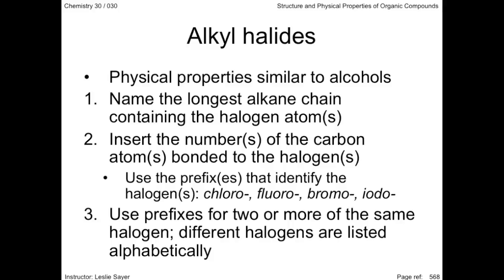Use di-, tri-, tetra-, etc. prefixes for multiple halogens that are the same. But if they're different, list the halogens alphabetically, although the di-, tri-, tetra-, etc. is not considered when alphabetizing.